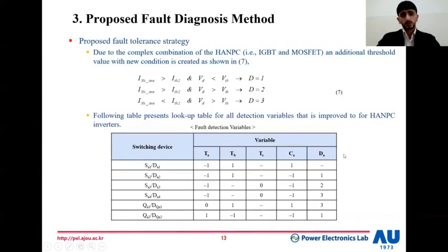Due to the complex combination of hybrid ANPC, it is very hard to use only the basic method shown in the previous slide to detect the MOSFET switch. So to identify it correctly, we add an additional threshold value, as shown in equation number seven, associated with a new condition, as shown here also. To sum up, the following table summarizes all kinds of conditions necessary to detect the different faults among all the switches in the phase. Here is the IGBT and MOSFET.